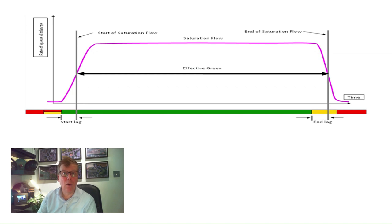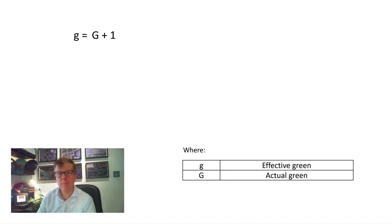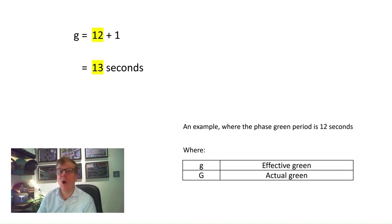Looking back at the saturation flow profile, we can also see the effective green period. Because of driver reaction times, vehicle dynamics and driver attitudes to driving through the leaving amber period, the end lag of vehicle discharge tends to be longer than the starting lag. Therefore the effective green period is slightly longer than the actual green time. The formula for effective green is: g = G + 1 second. In the example, 12 seconds actual green time plus 1 second gives an effective green of 13 seconds.